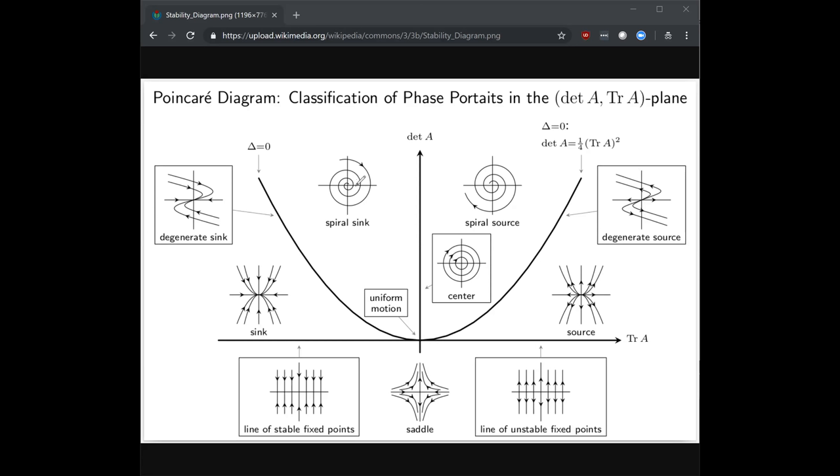Similarly, if you're over here, where you have the trace of A negative and a positive determinant, but you are above this discriminant line here, then you're going to end up with a spiral sink. A fixed point that is stable and if you are off of it, you will slowly spiral around and around until you collapse into the fixed point.